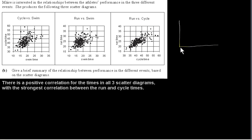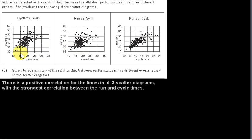We're dealing with a positive correlation: as one variable increases, the other increases. For a negative correlation, as one variable increases the other decreases — we would see a downward trend, which doesn't happen in any of these scatter diagrams. This is not surprising: someone with a short swim time would be expected to have a short cycle time, and similarly for a long swim time.